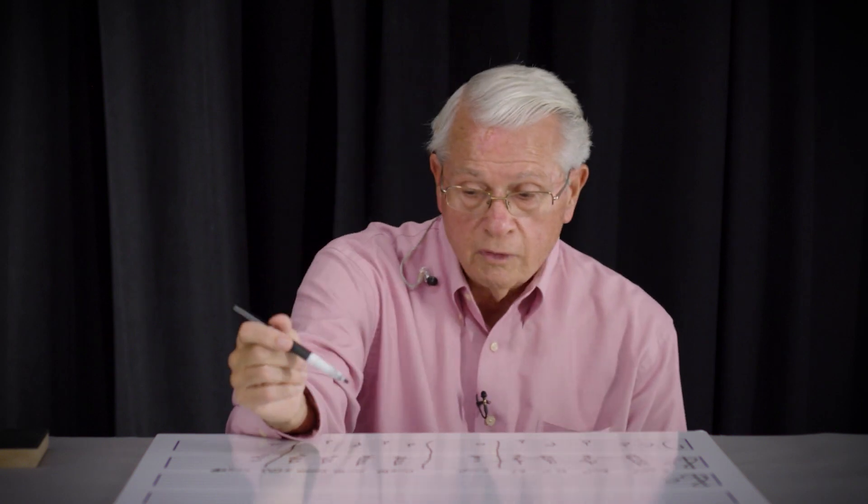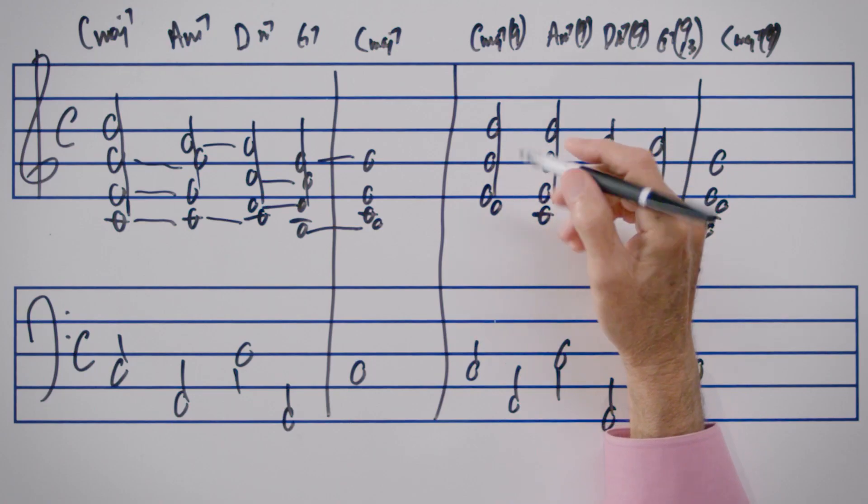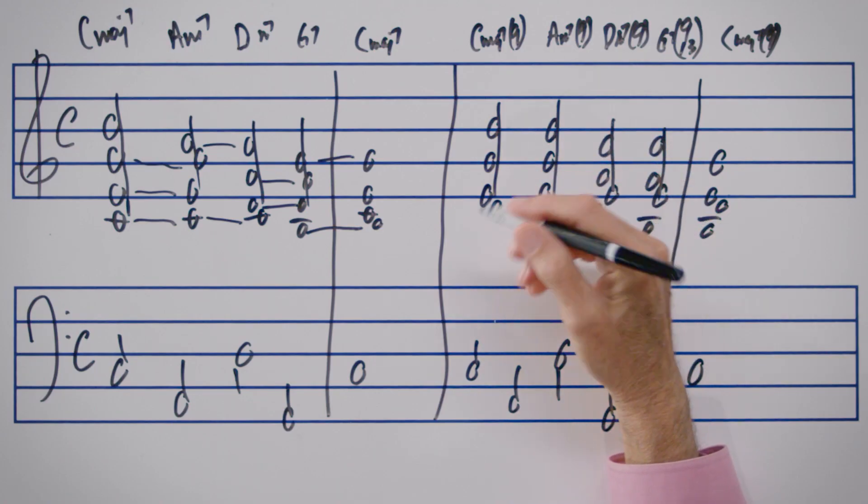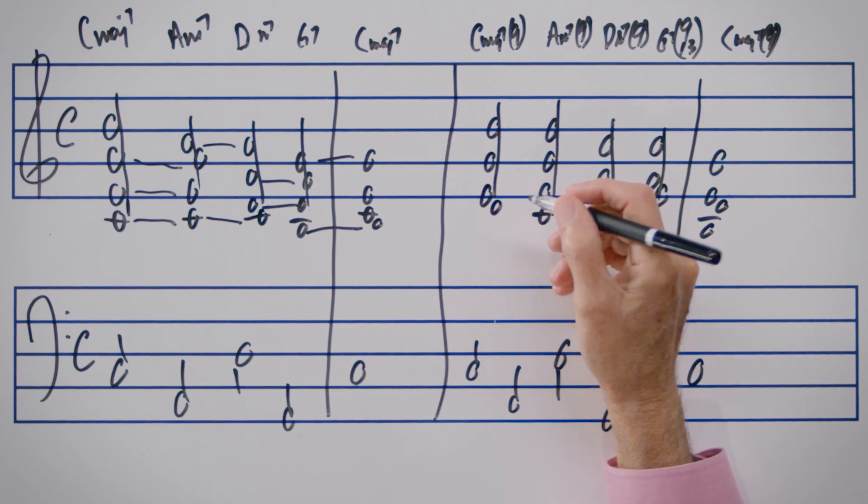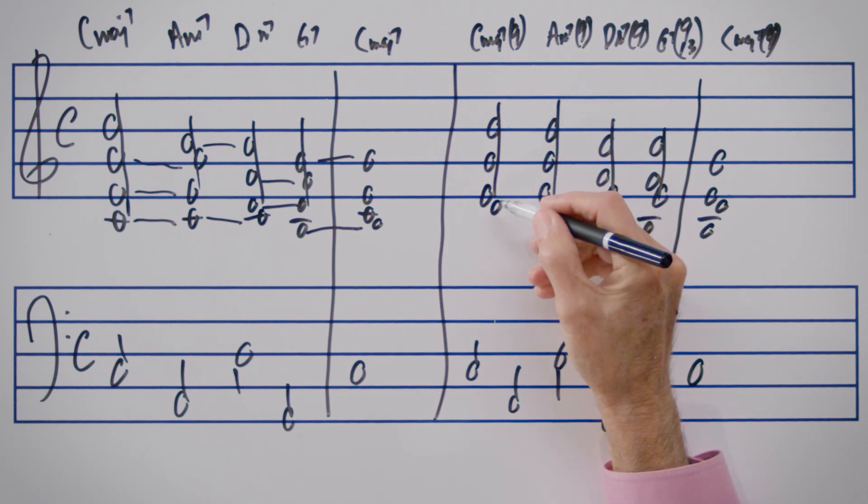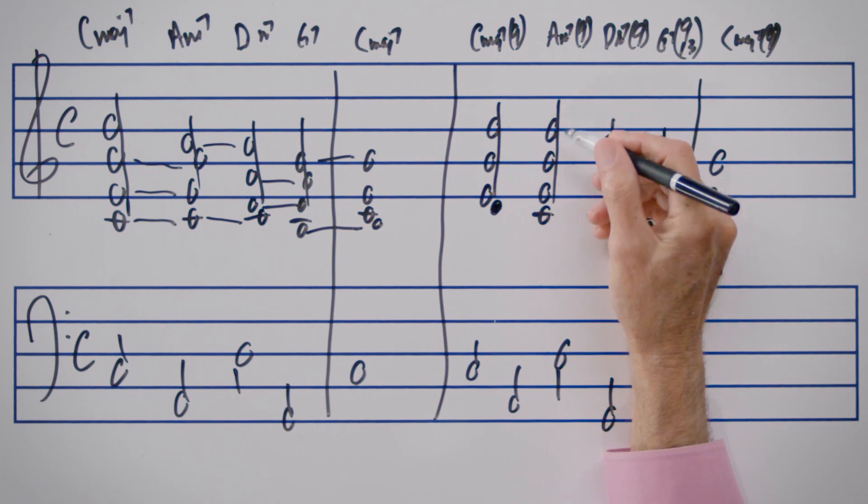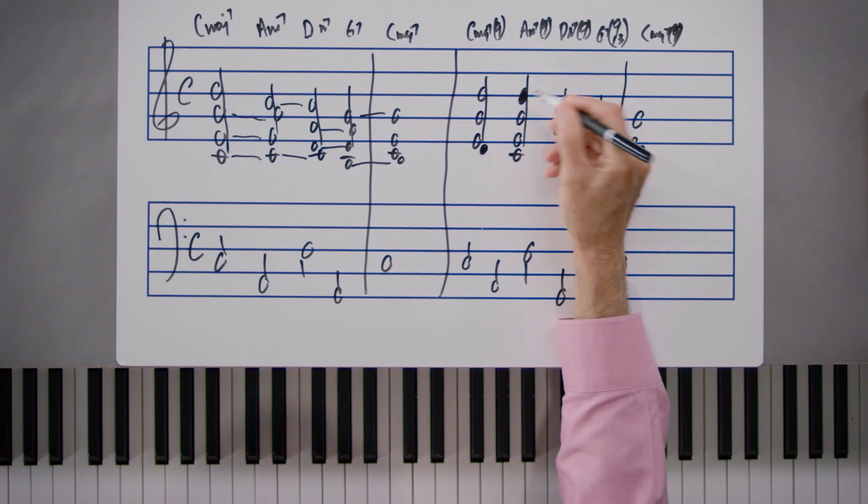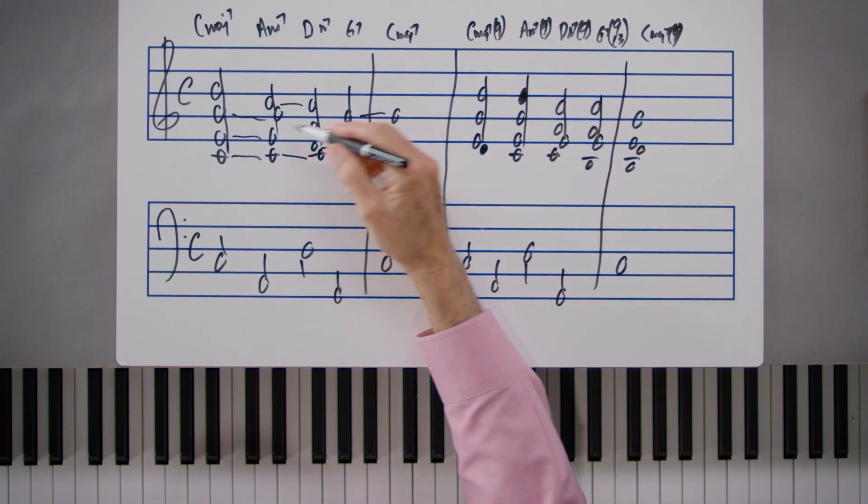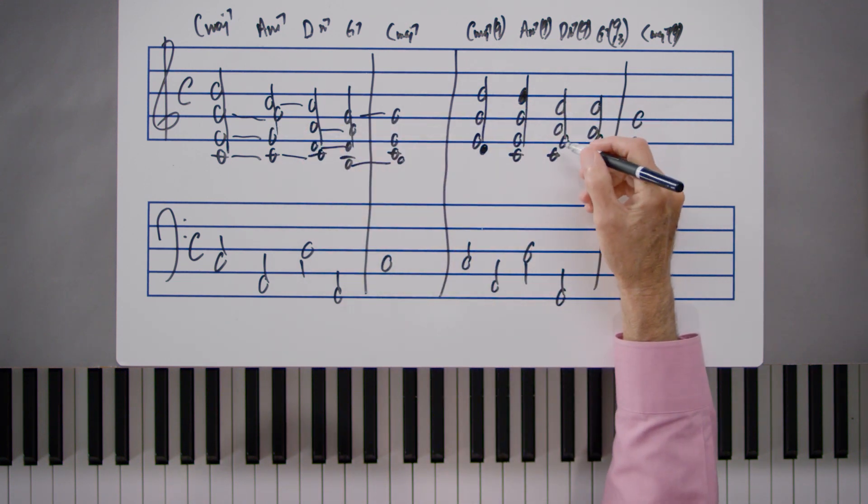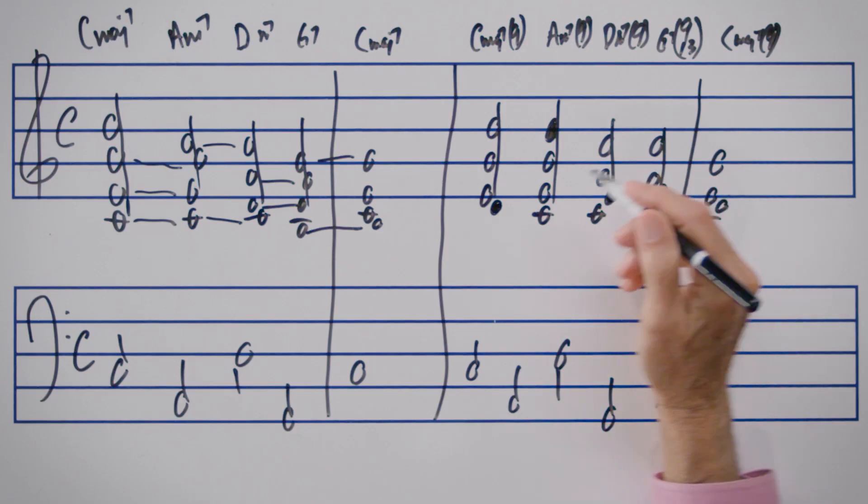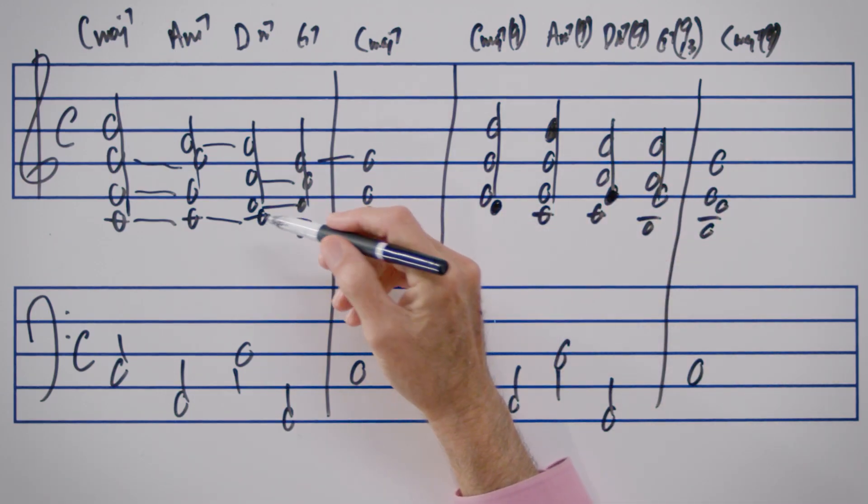As we prepare to look at drop 2, we want to be adding the tension notes similar to what we did with the 2-5-1. The 9th of the chord on the C major 7 would be the use of the note D in place of the note C. On the A minor 7, the 9th would be the use of the note B in the place of the note A. And the D minor 7 with the use of the 9th, which would be the note E in place of the note D.